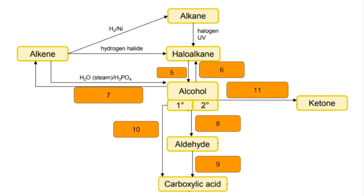Number 5: haloalkane to alcohol — you react the haloalkane with aqueous sodium hydroxide. Number 6, going the other way, alcohol to haloalkane — you react it with a sodium halide and sulfuric acid.